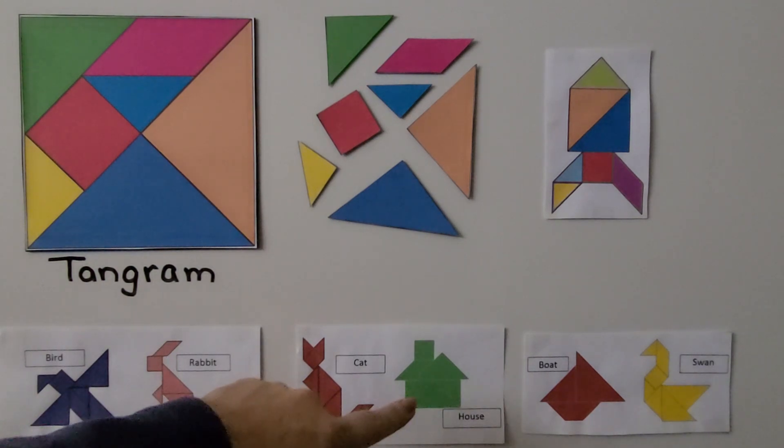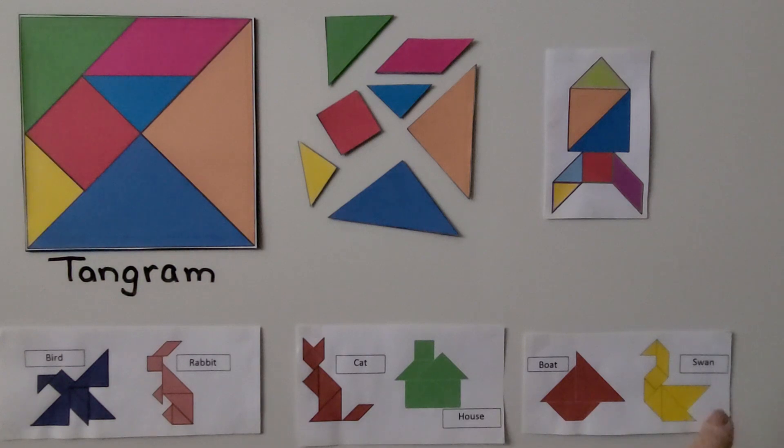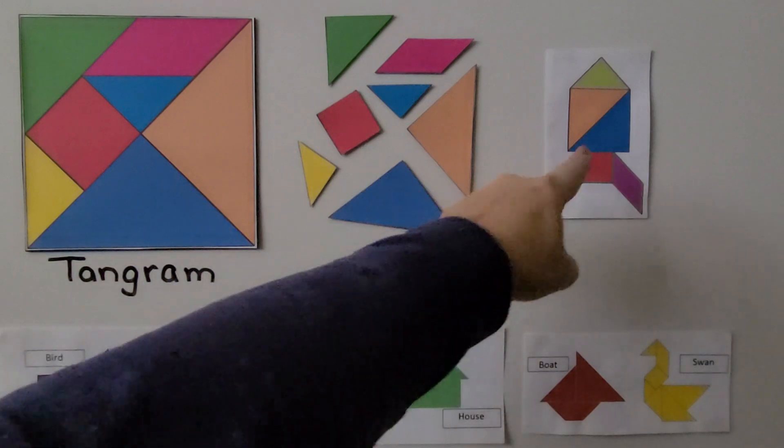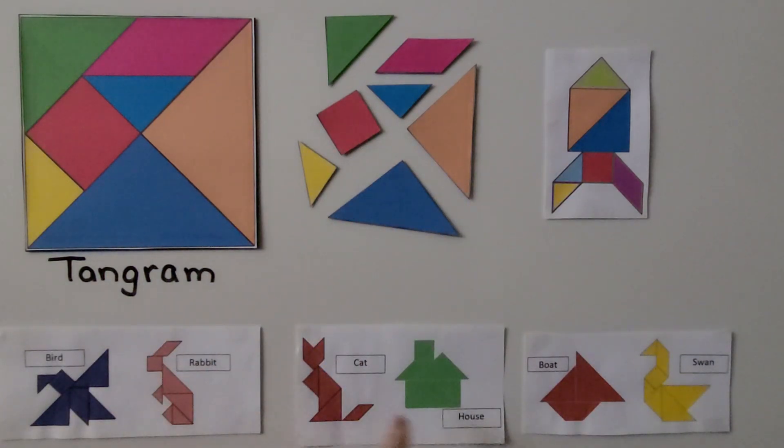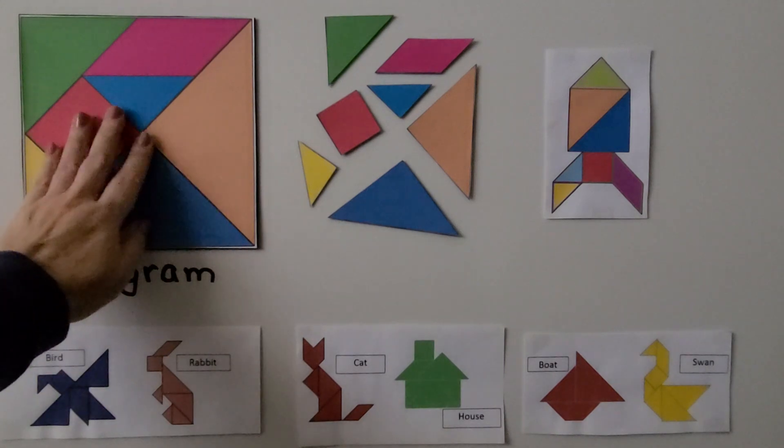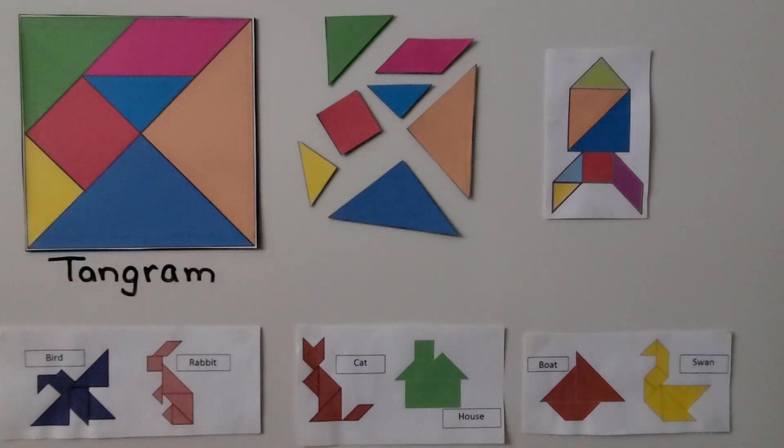A boat, a swan, even a rocket ship. We can move these pieces around to make these puzzles. And there's a printable image of a tangram in the Joanne School Facebook photo section in the geometry album. And you'll be able to make these.